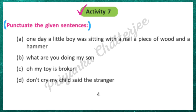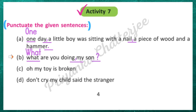Next, activity 7: punctuate the given sentences. That means using punctuation marks — which include capital letter, full stop, comma, question mark, etc. Every sentence will start with a capital letter. If you give the correct solution, that gives you full points.